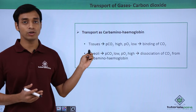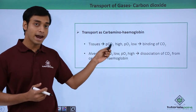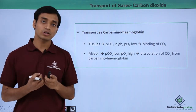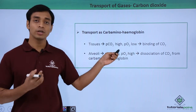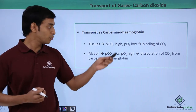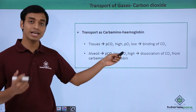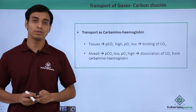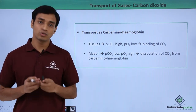At the alveoli, the partial pressure of carbon dioxide is low and the partial pressure of oxygen is high — low because carbon dioxide has been brought by the blood to the alveoli, and high because atmospheric air there has a large amount of oxygen. This condition allows the dissociation of carbon dioxide from carbaminohemoglobin, so carbaminohemoglobin releases carbon dioxide, which is expelled through the alveoli and out through the nostrils.